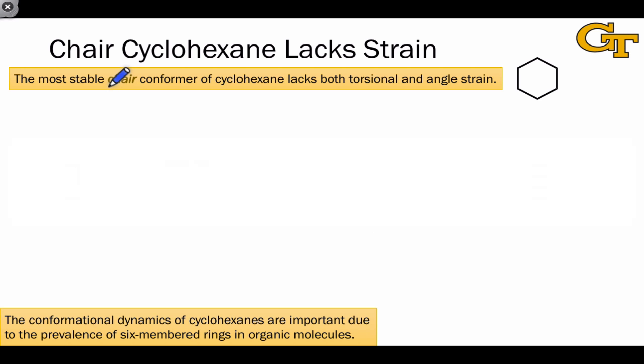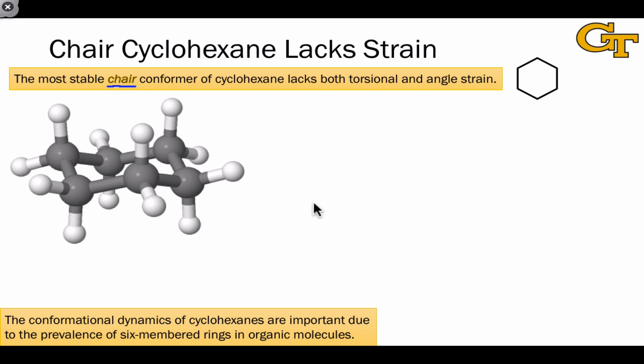The most stable conformation of cyclohexane is called the chair. The chair conformer looks like this and the reason we call it a chair becomes apparent if we think about the appearance of a lounge or beach chair next to this conformation. Just as a beach chair has a headrest, the chair conformer has a region of the molecule where one of the carbons sticks up representing that headrest. And just as the beach chair has a place to rest your feet at the bottom, the chair conformation also includes a carbon that represents the footrest of the chair.